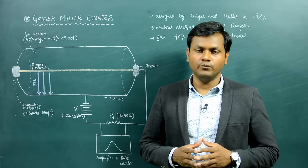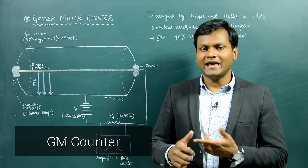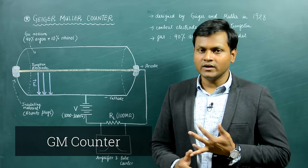What is a GM counter? A GM counter is a kind of a nuclear detector which is capable of detecting different kinds of nuclear radiation like alpha particles, beta particles, gamma radiation, and also in some cases neutron particles through some kind of an indirect method.